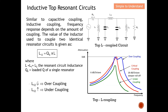The inductive top resonator circuit has a reverse effect compared to the capacitive top resonator circuit. For capacitive coupling: small C12 gives under-coupling, large C12 gives over-coupling. For inductive top resonator circuit: a very small L12 causes over-coupling with two peaks, and a very large L12 causes under-coupling with a large insertion loss. The objective remains the same — use the equation to calculate the critical coupling value.